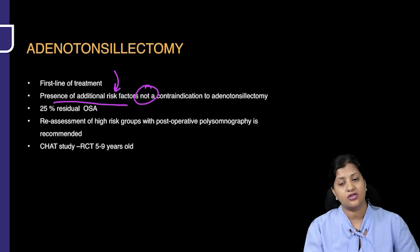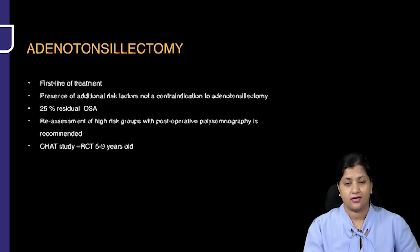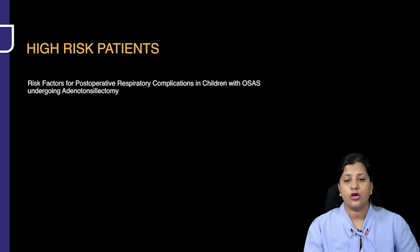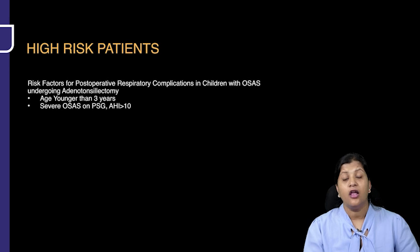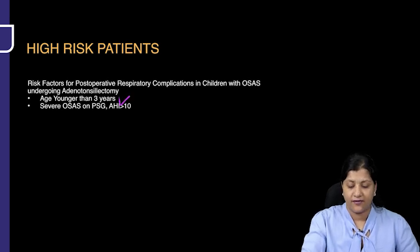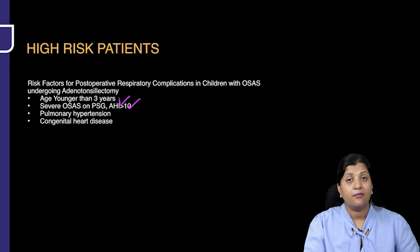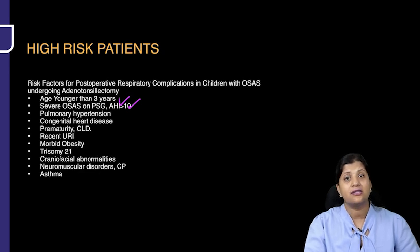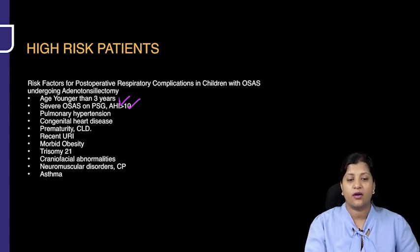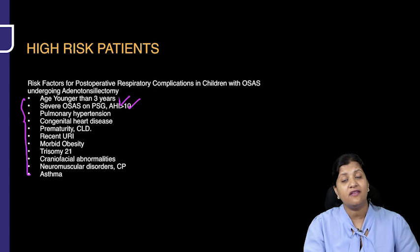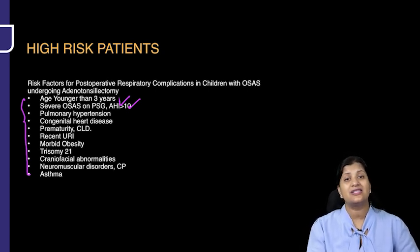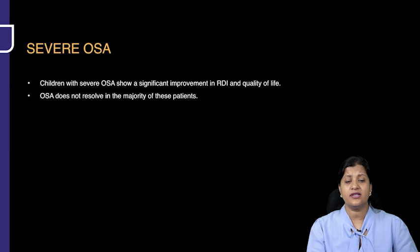Reassessment of the high-risk group should be done post-surgery, and polysomnography is recommended. High-risk patients for post-operative respiratory complications in children with OSA undergoing adenotonsillectomy include those less than three years of age, those with severe OSA, pulmonary hypertension, cardiovascular or congenital heart disease, prematurity, obesity, craniofacial abnormalities, genetic abnormalities, or neuromuscular abnormalities. You will manage these patients more carefully with intensive post-operative monitoring.